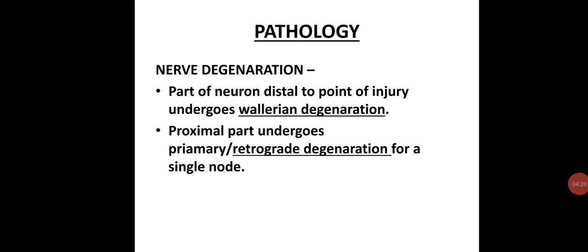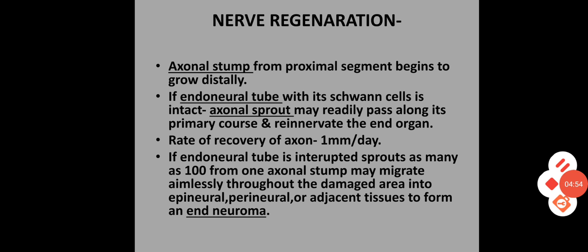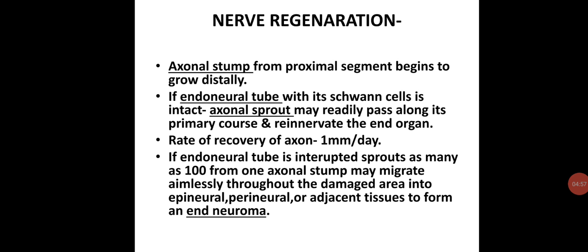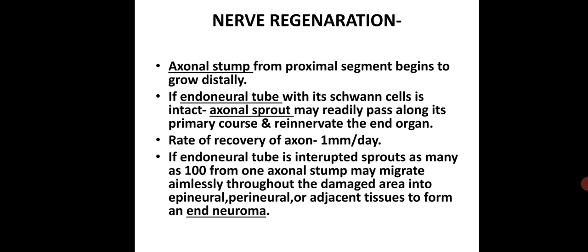The proximal part undergoes primary or retrograde degeneration for a single node. For nerve regeneration, the axonal stump — the site of injury where the nerve fiber is damaged — begins to grow distally from the proximal segment. If the endoneural tube with its Schwann cells is intact, an axonal sprout may readily pass along its primary course and re-innervate the end organ. The rate of axonal recovery is 1 mm per day. If the endoneural tube is interrupted, sprouts — as many as 100 from one axonal stump — may migrate aimlessly throughout the damaged area into epineural, perineural, or adjacent tissue to form an end neuroma. An end neuroma is a benign neural tumor that commonly forms after nerve transection.